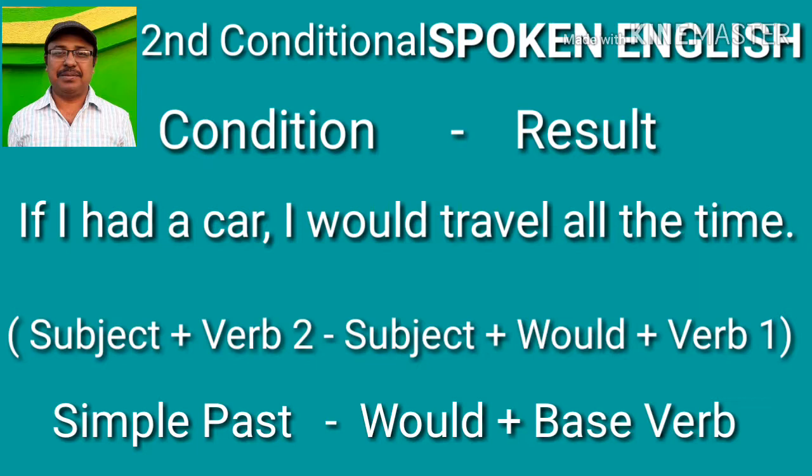In the second part of the sentence: subject plus would plus base verb. So what is a base verb? Base verb means the present form of the verb without -s or -es — like 'go'. We cannot use 'went' or 'gone' after 'would'.